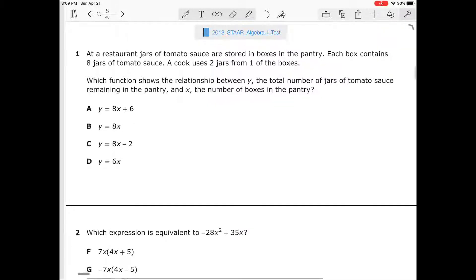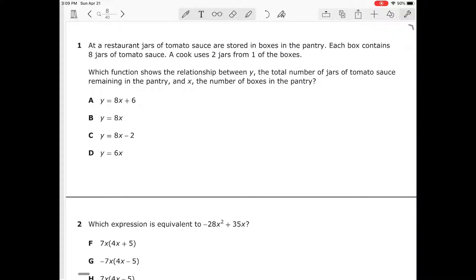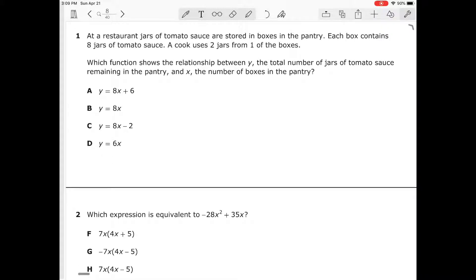Hello, on this episode of Mathmeowtics we're going to go over the 2018 STAR test. On question number one, we have: at a restaurant, jars of tomato sauce are stored in boxes in the pantry. Each box contains eight jars of tomato sauce and a cook uses two jars from one of the boxes.